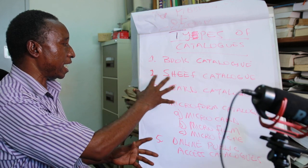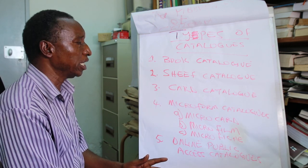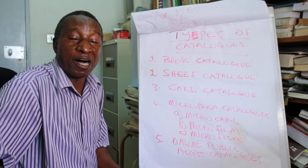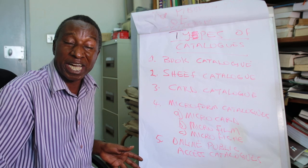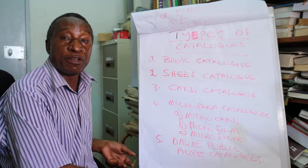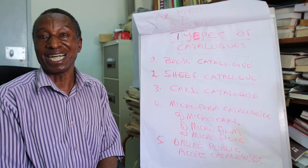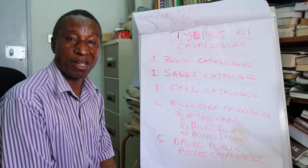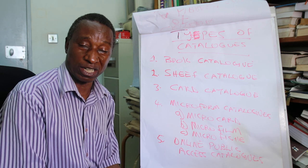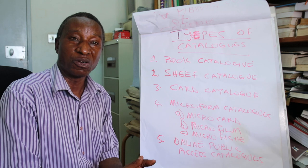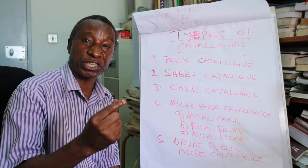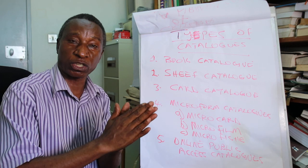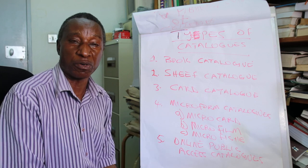Starting from book catalogs going down to computerized catalogs. I'll briefly look at some of the details of these different types of catalogs. The details are found on our website — when you go to our Moodle lectures platform you'll find detailed information, so I encourage you to read the modules and other lecture materials. The first catalog is the book catalog, one of the earliest forms of catalogs, where the records of library materials were kept on sheets which were compiled to make a book.